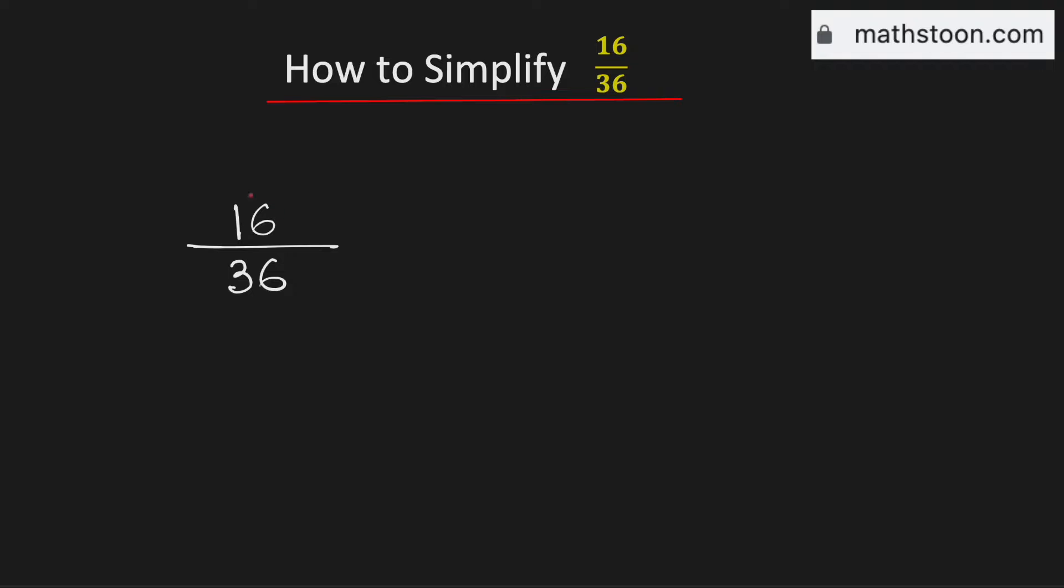See that 2 is a common divisor of both. So to simplify it we need to divide them by 2. As a result we will get 8 in the numerator and 18 in the denominator.